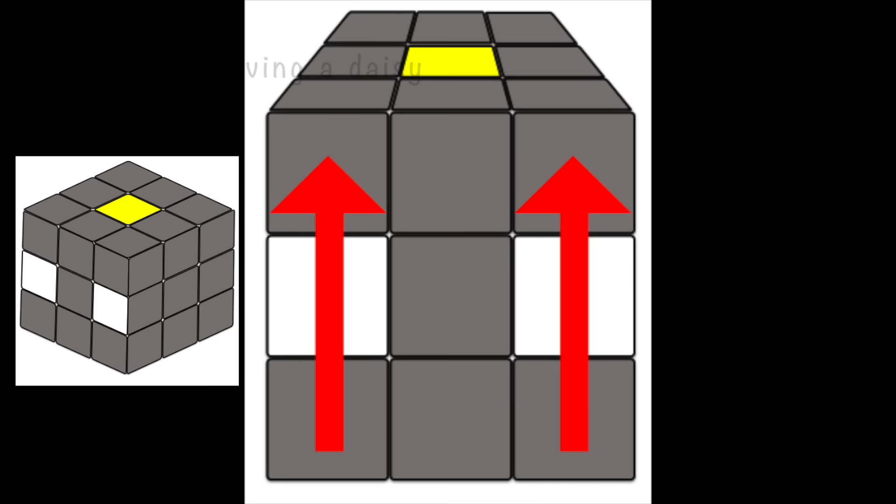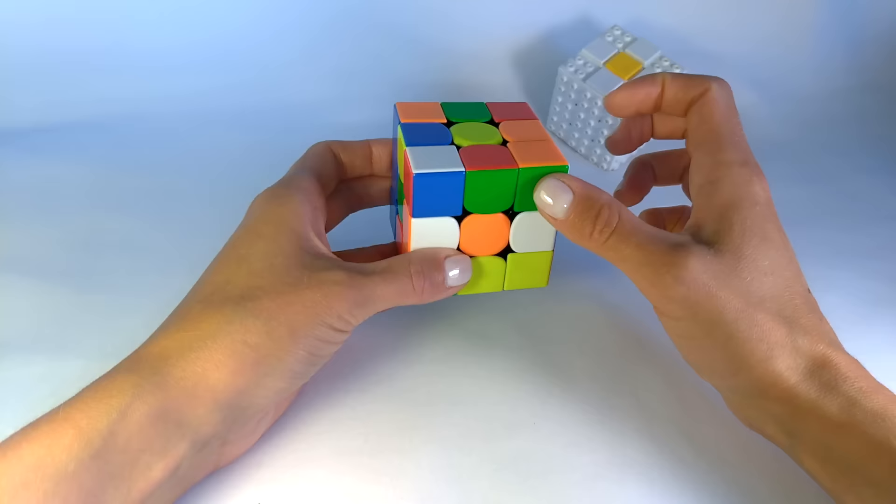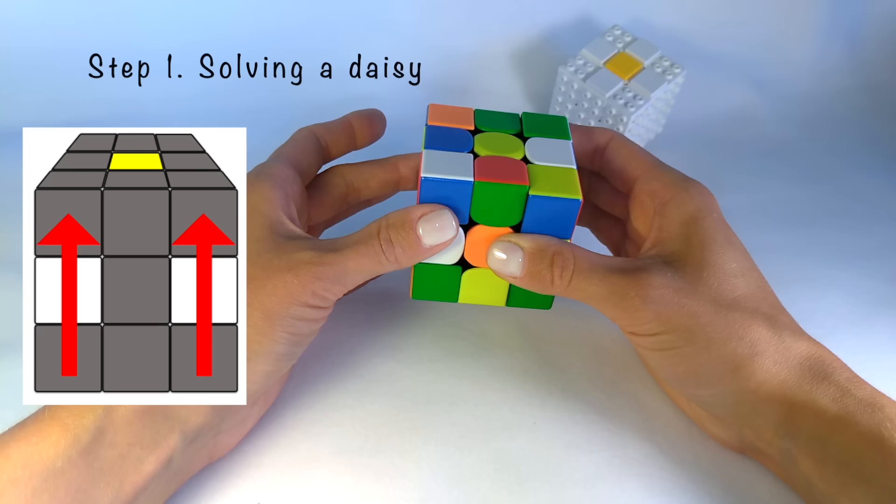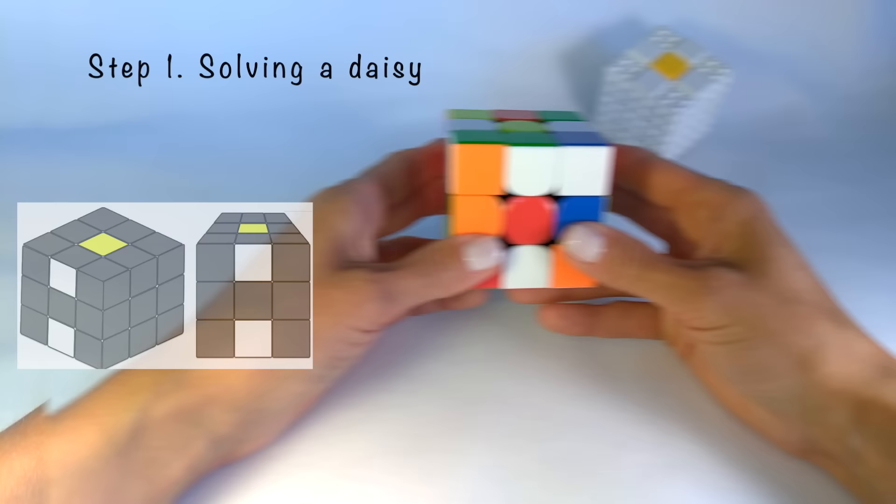The first situation when the white edge is on the middle layer. In this situation, we need only one move. If the white edge is on the right side, turn the right side up. The edge on the left side up too.